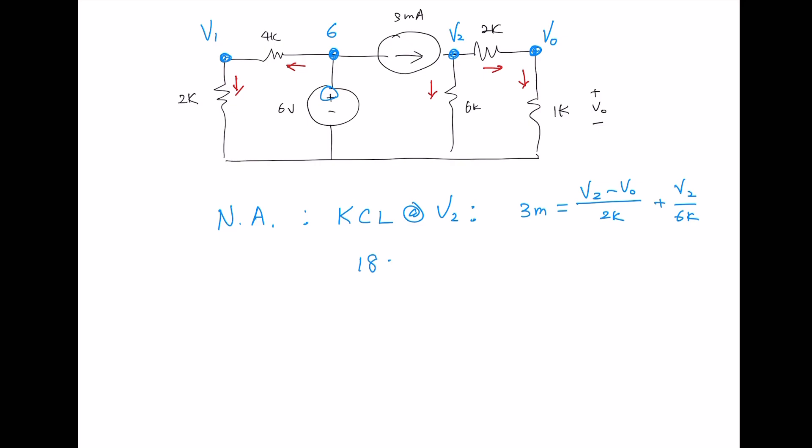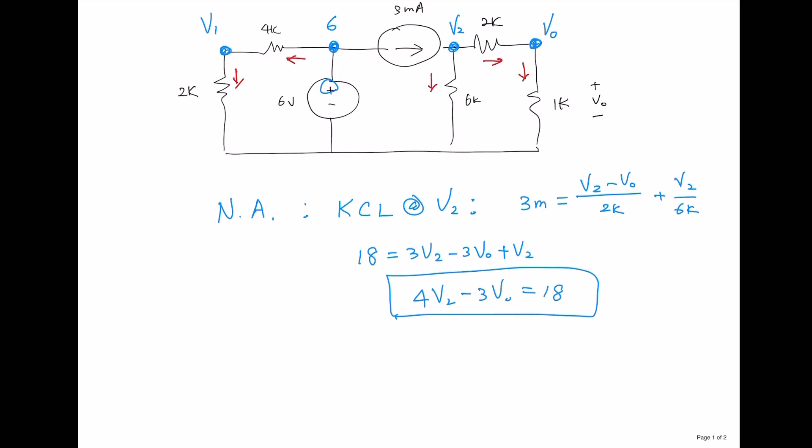18 equals 3V2 minus 3V0 plus V2. So we have one equation. 4V2 minus 3V0 equals 18. Now we need to get the second equation for V0.